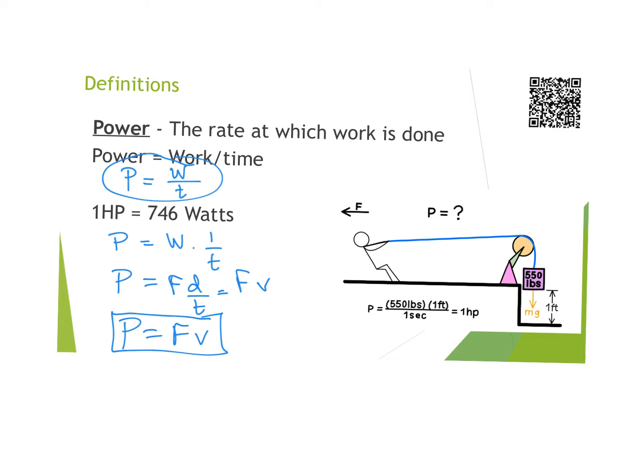Most of the time when we talk about power, we look at it in terms of watts — like on your energy bill. But for mechanical stuff, we typically use horsepower. The conversion factor is one horsepower equals 746 watts. You don't need to memorize this — if it's needed on the test, it will be given to you. It's not on your purple sheet, and the AP test would also provide it.